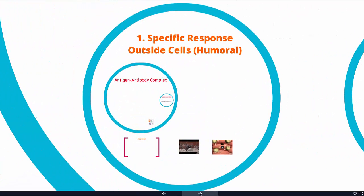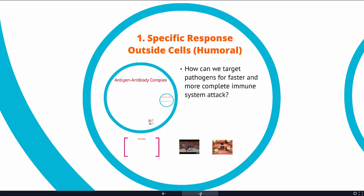The humoral response is a way to target pathogens faster for a more complete immune system attack. Think of neighborhood police officers randomly pulling over cars and checking IDs — they'll occasionally find someone who shouldn't be there, but a lot of times they'll pull over individuals that are perfectly fine. Now imagine if we had a big red flag on every car with a criminal in it — that would make the job really easy.